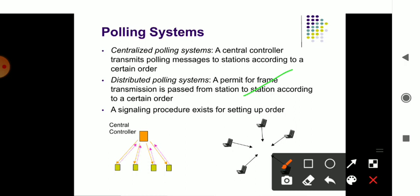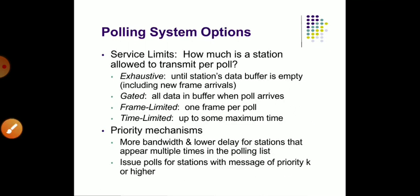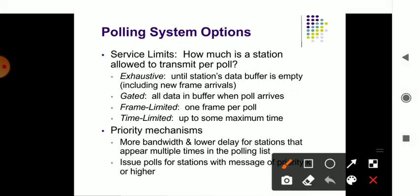So that is a polling system. Here the diagram is shown — you can check out what a polling system is. One central controller sends information to multiple systems. From a central system, information is sent to multiple systems, which is called a distributed polling system. It has various limits when you consider the polling system, and it is said to be exhaustive.